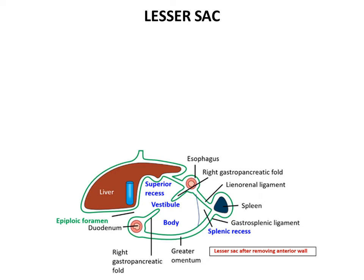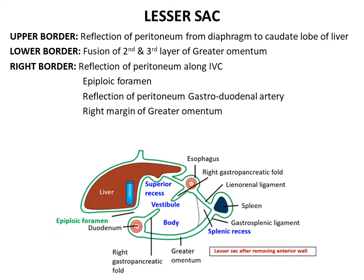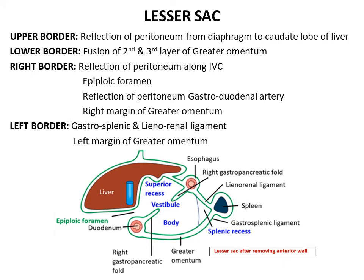The four borders of the lesser sac, starting from the groove for the inferior vena cava: the upper border is formed by the reflection of peritoneum from the diaphragm to the caudate lobe of the liver, extending from the groove for the inferior vena cava and fissure for ligamentum venosum up to the esophagus. The lower border is formed by the fusion of the second and third layers of the greater omentum. The right border extends from the reflection of peritoneum along the inferior vena cava, below which lies the opening of the epiploic foramen, then the reflection along the gastroduodenal artery and the right margin of the greater omentum. The left border is formed by the gastrosplenic and lienorenal ligaments and the left margin of the greater omentum.